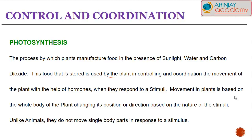Photosynthesis is the process by which plants manufacture their food in the presence of elements such as sunlight, water, and carbon dioxide. This food which is stored by the plants helps in the control and coordination, which is basically the movement of the plant with the help of hormones. The movement of a plant is based on the whole body of the plant changing its position or direction based on the nature of the stimuli.